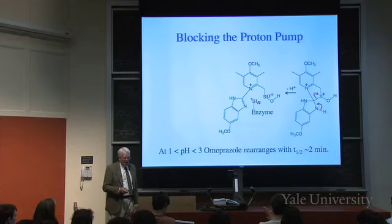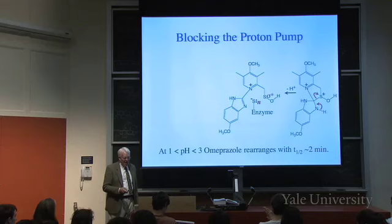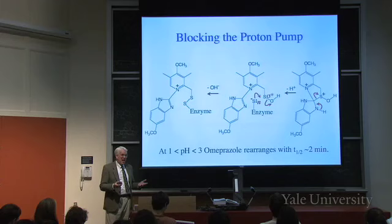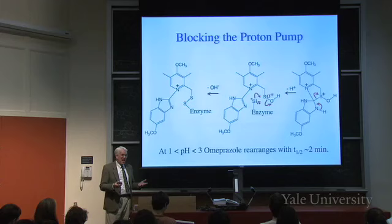So we've got that low LUMO and the high HOMO on the sulfur coming in. We can do exactly the same reaction: make a bond, break a bond, OH- goes away, and we have now formed a covalent bond with the enzyme. So the enzyme can't do its stuff anymore because it's tied up.